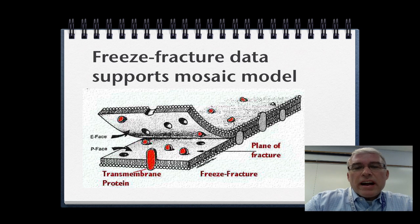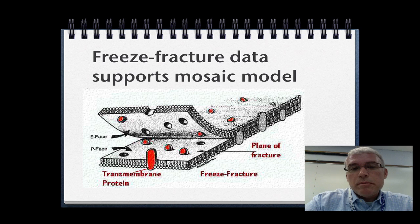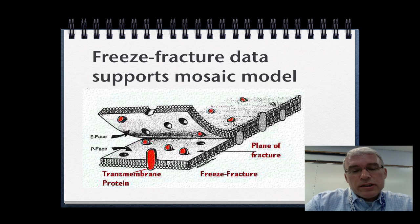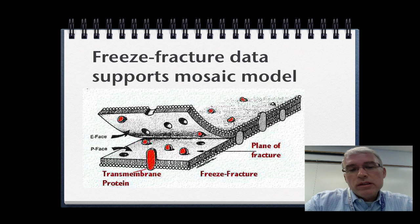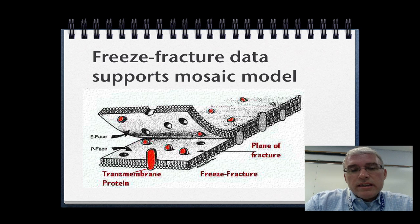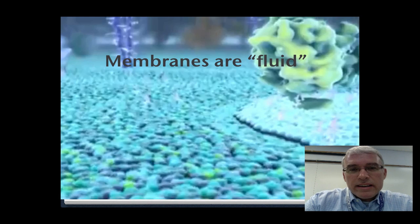New data from freeze fracture technology supports the idea that the phospholipid bilayer contains embedded proteins. If you freeze a cell membrane and then split it, it breaks along its weakest fault line between the phospholipid bilayer. Looking at these layers while frozen, you can see the knobs, projections, and holes left over from where the proteins were, which proves that these proteins are in fact embedded in the phospholipid bilayer.